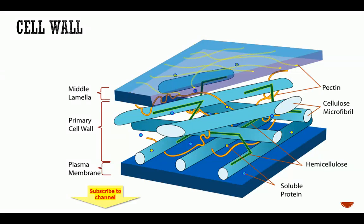Welcome to another segment of our class. In this lecture we're looking at the cell wall. The cell wall comprises different layers: we have the primary cell wall and the middle lamella. As you can see from the diagram, we have the pectin, the cellulose microfibril, the hemicellulose, and some soluble proteins embedded in the primary cell wall, as well as pectin embedded in the middle lamella. Before the cell wall is a plasma membrane as you go into the cell, and as you go outside the cell you have the primary cell wall after the plasma membrane, followed by the middle lamella.